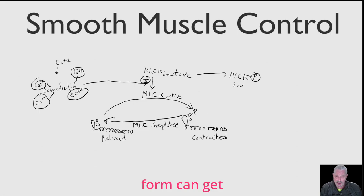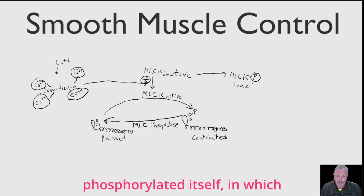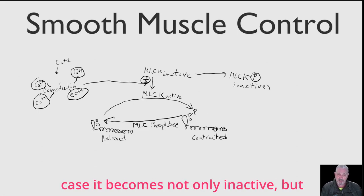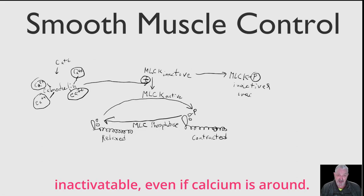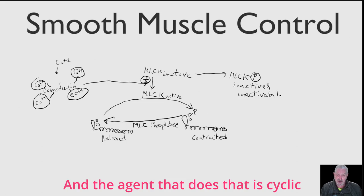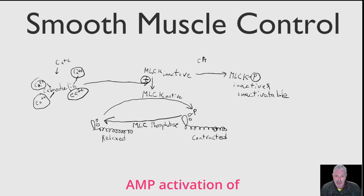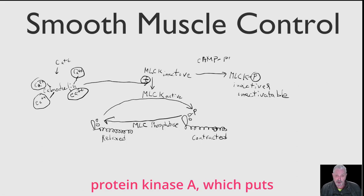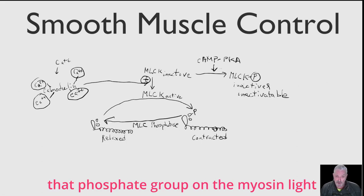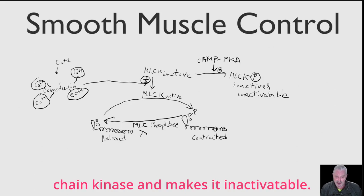Myosin light chain kinase in the inactive form can get phosphorylated itself, in which case it becomes not only inactive but inactivatable, even if calcium is around. The agent that does that is cyclic AMP activation of protein kinase A, which puts that phosphate group on the myosin light chain kinase and makes it inactivatable.